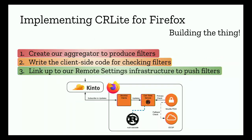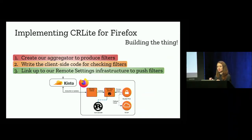Some of the other steps were easier but did present a few bumps. Writing our client-side code was delayed by waiting on other Mozilla teams to provide Rust bindings. Linking up to our remote settings infrastructure didn't present too much of a problem, but it raised an interesting process question: our remote settings infrastructure isn't typically used more than once a day, but now we want to use it four times a day in a highly automated fashion. We'll have to work with our remote settings team to get our deltas sent four times a day. Hopefully this gives a small sense of what it's like to build this thing for a production environment.